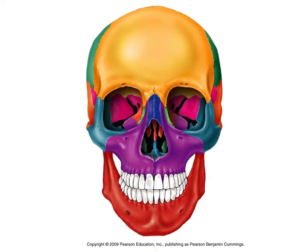On this quiz, I still might ask you the frontal, parietal, sphenoid, temporal, maxilla, mandible, but I just want to kind of focus in on some of the smaller details around the orbital areas and nasal areas. So let's go ahead and get started.